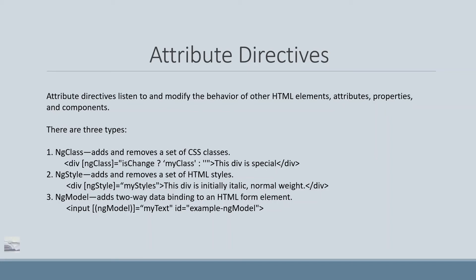Now let's discuss attribute directives. Attribute directives listen to and modify the behavior of other HTML elements, attributes, properties, and components. There are three types: ng-class, which adds and removes a set of CSS classes; ng-style, which adds and removes a set of HTML styles; and ng-model, which helps us achieve two-way data binding to an HTML form element.